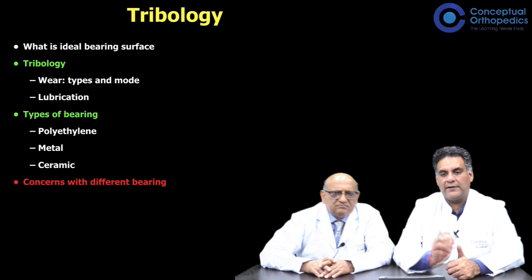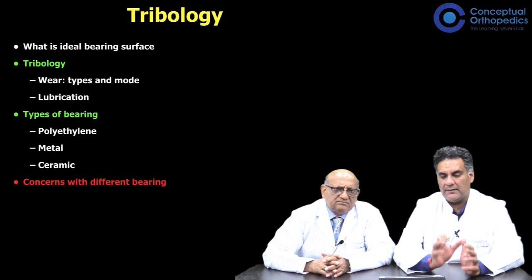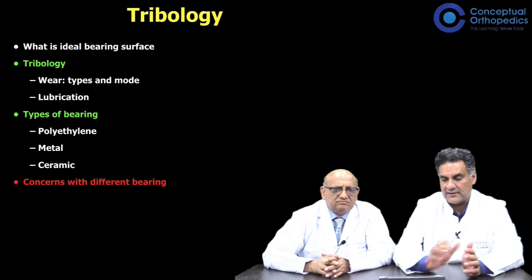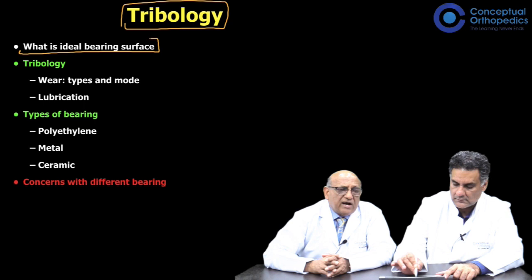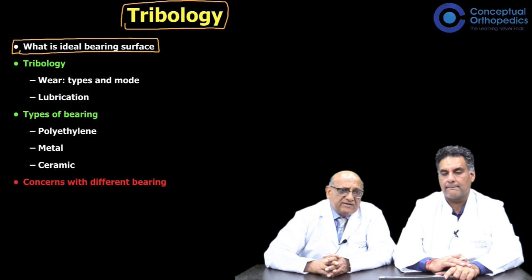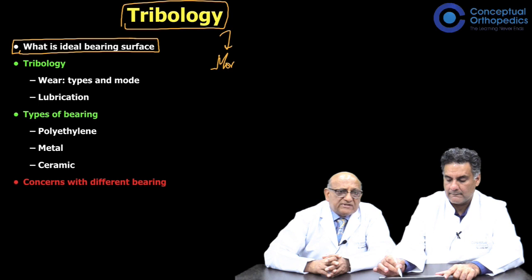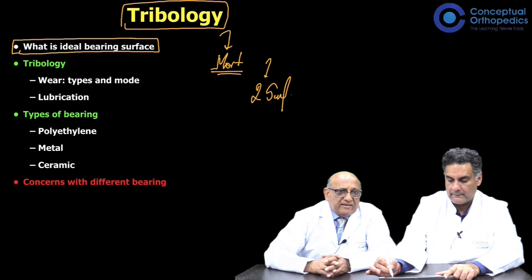This is part two of our total hip replacement lecture. In part one we spoke about basic introduction to hip replacement, the Charnley concept, and the preoperative workup. Now, tribology is basically the science of understanding the relative movement between two articulating surfaces. The study of tribology covers wear — including its types and modes — lubrication, and friction.